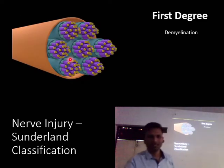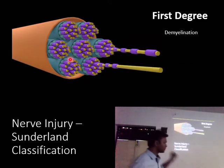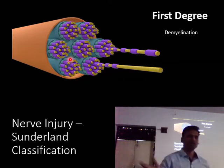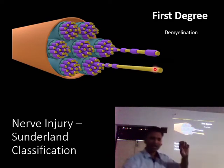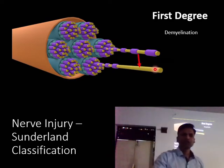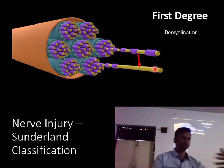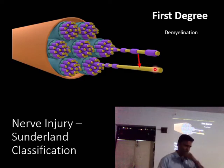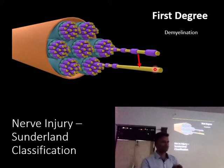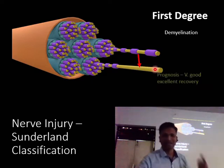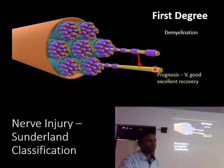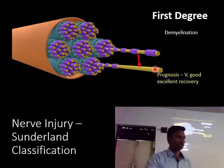In Sunderland's first degree, there is demyelination — the myelin sheath is damaged due to blunt trauma and inflammation, but it can regrow over time. There is no loss of continuity of the endoneurium or the axon. Because we have an intact endoneurium and an intact axon, recovery will be excellent — full recovery within one to three months.